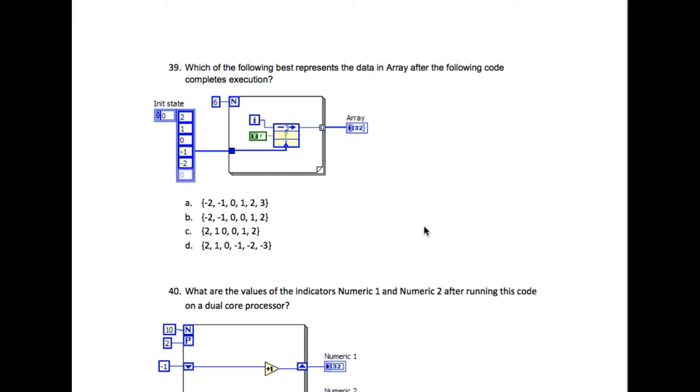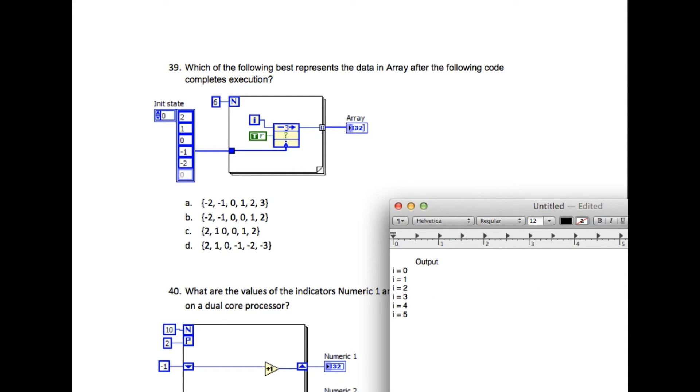Notice that the for loop is configured to run six times and has a feedback node with a delay of three. In this case, whenever you configure the initialized value into the feedback node, as long as there is a delay, the feedback is going to output the initialized value.